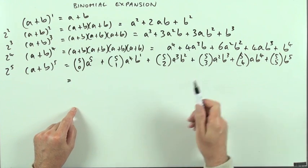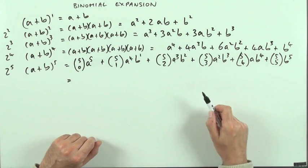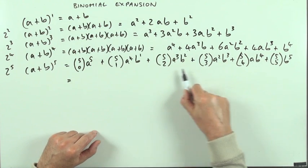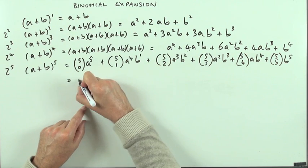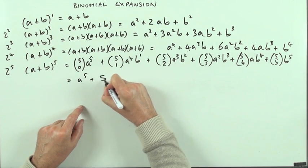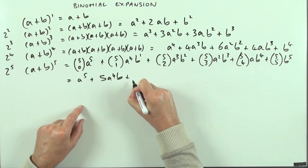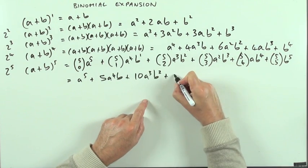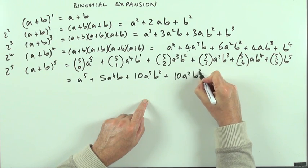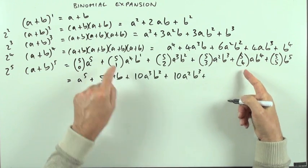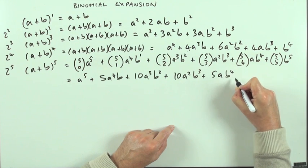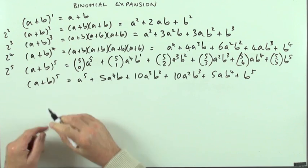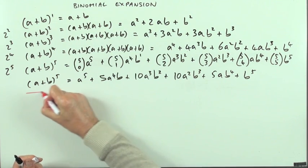Those numbers come from Pascal's triangle, which gives you these coefficients. That's: a⁵ + 5a⁴b + 10a³b² + 10a²b³ + 5ab⁴ + b⁵. That is the binomial expansion of (a + b) to the power 5.